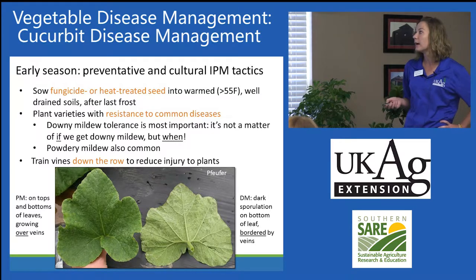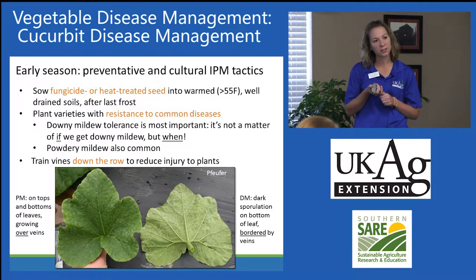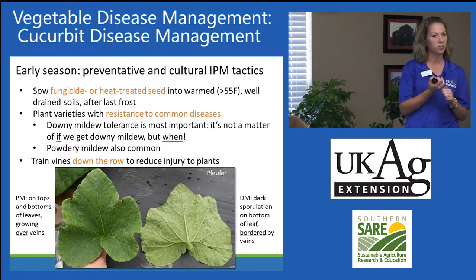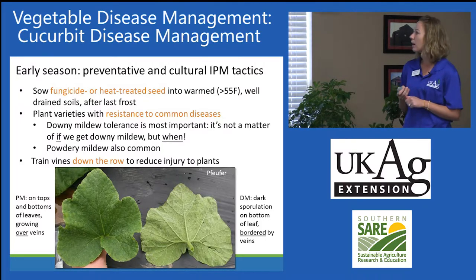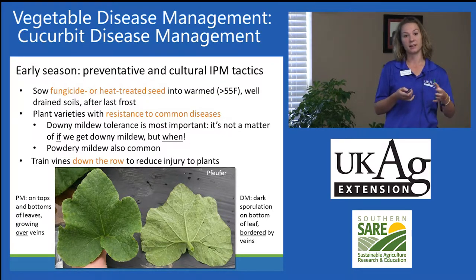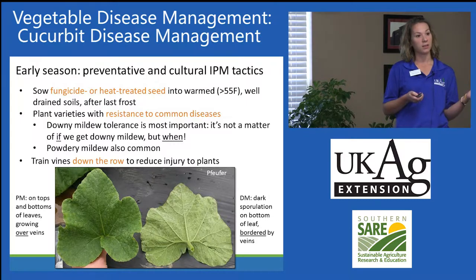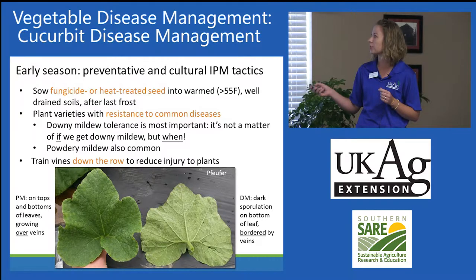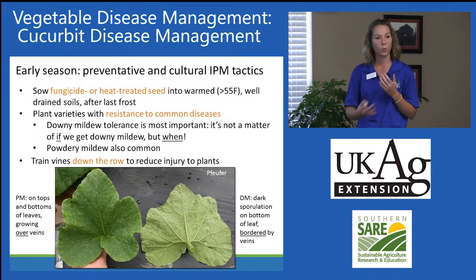Early season in cucurbit disease management, we want to be sowing fungicide- or heat-treated seed. The only heat-treated seed available for cucurbits is generally cucumber; other seeds aren't effectively heat-treated, though some can be fungicide-treated to help guard against pythium damping-off diseases. It's important to sow cucurbits into warm, well-drained soils, as cucurbits aren't frost tolerant at all.